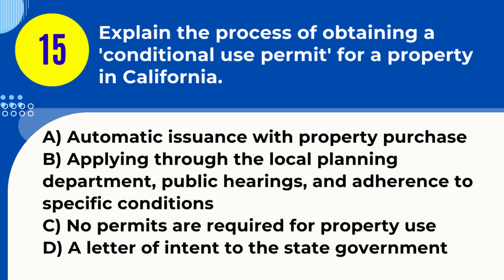Question 15. Explain the process of obtaining a conditional use permit for a property in California. A. Automatic issuance with property purchase. B. Applying through the local planning department, public hearings, and adherence to specific conditions. C. No permits are required for property use. D. A letter of intent to the state government. Answer: B. Applying through the local planning department, public hearings, and adherence to specific conditions. Explanation: Obtaining a conditional use permit in California involves applying through the local planning department, potentially undergoing public hearings, and meeting specific conditions set for the property's use.